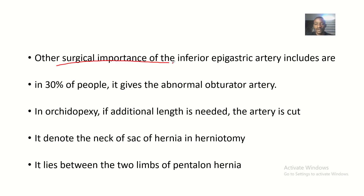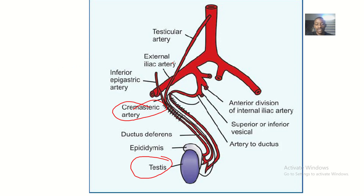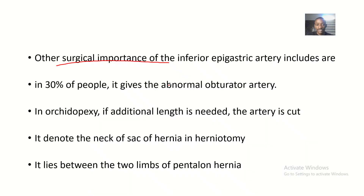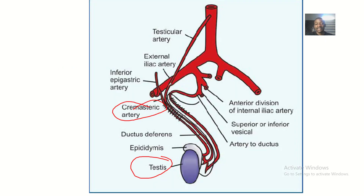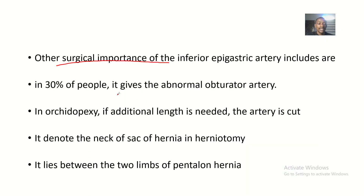Another surgical importance is that in 30 percent of people, the inferior epigastric artery gives rise to the abnormal obturator artery. The obturator artery is not found in all humans — only in some, and it's considered abnormal.